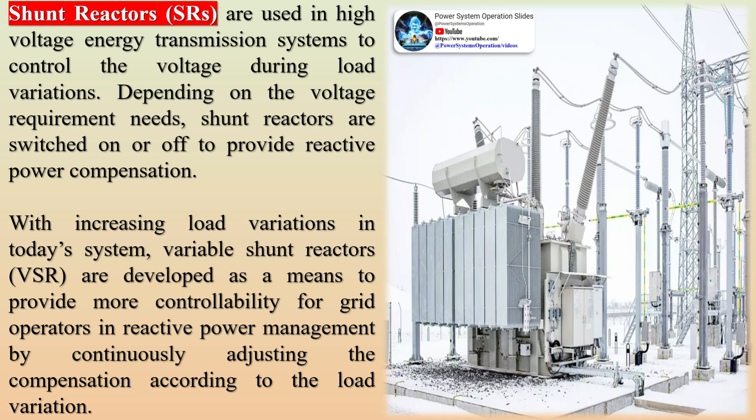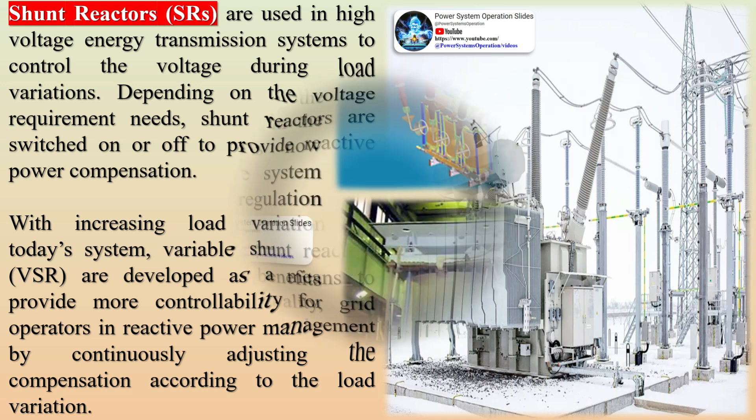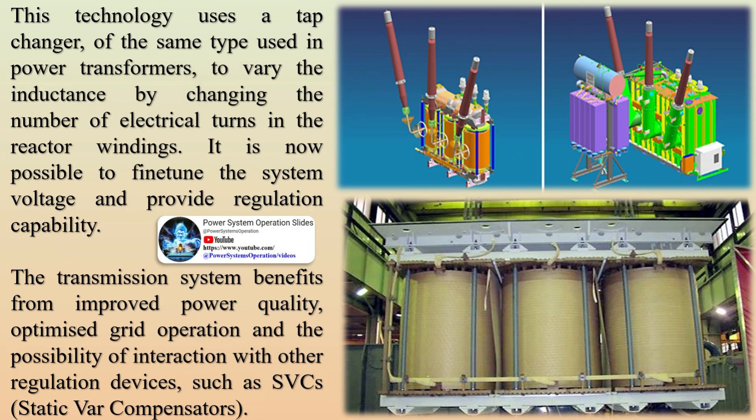This technology uses a tap changer, of the same type used in power transformers, to vary the inductance by changing the number of electrical turns in the reactor windings. It is now possible to fine-tune the system voltage and provide regulation capability.